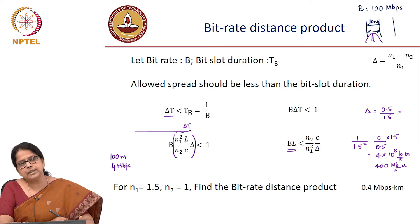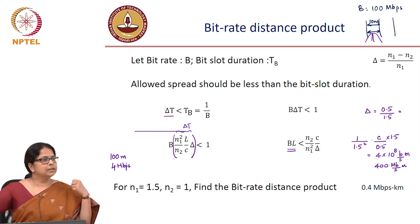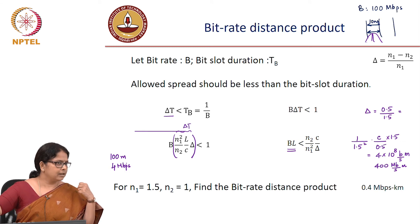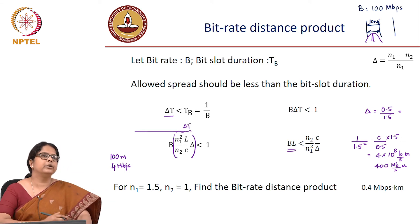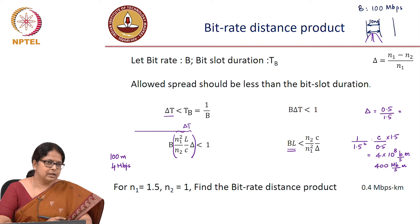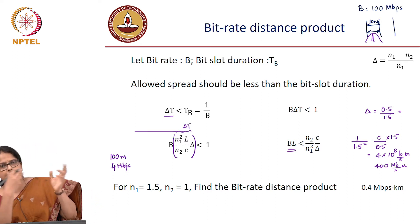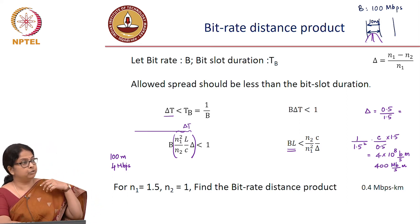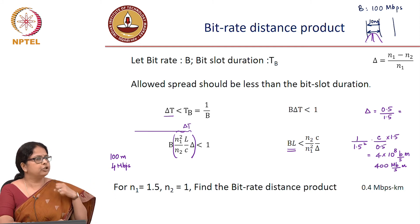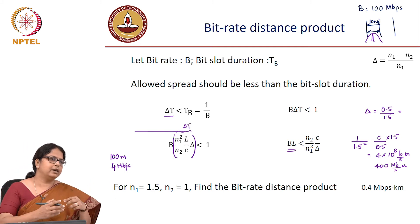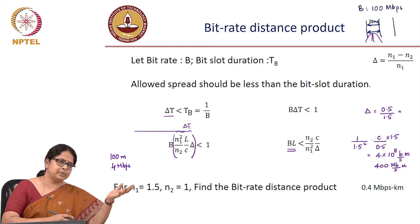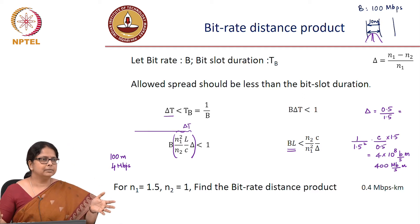But if I want to do the same 1 mbps for, I want to now set up a link which is 1 kilometer long, it is not going to work out. So a designer will always optimize the performance. You do not have to go to a high-end design or you should not over specify, right?